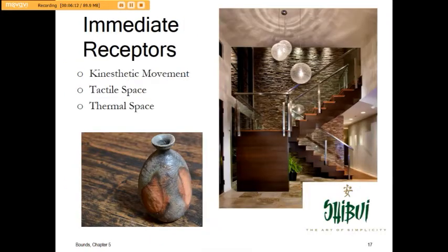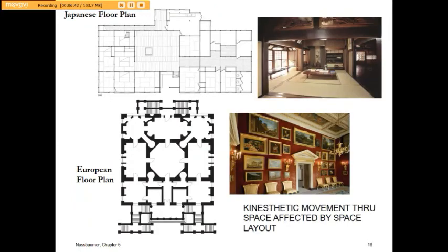Our immediate receptors are about tactile space — things that affect the heat of our skin and our movement through the space. The Japanese floor plan is wide open and we can move all the walls at any given time, giving a lot of flexibility. The European floor plan must be experienced in a very linear kind of method — it definitely affects how we use space.